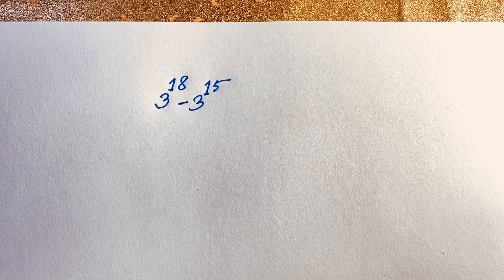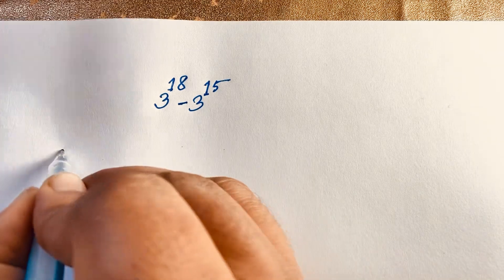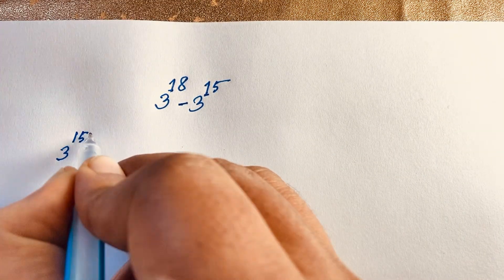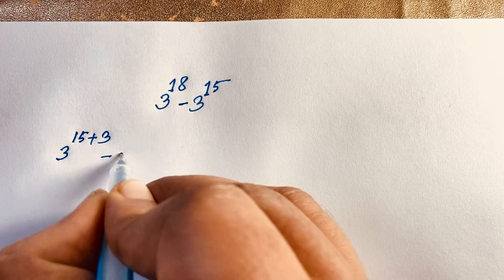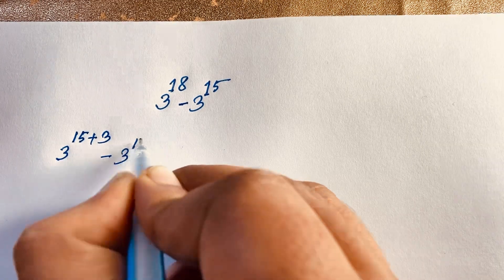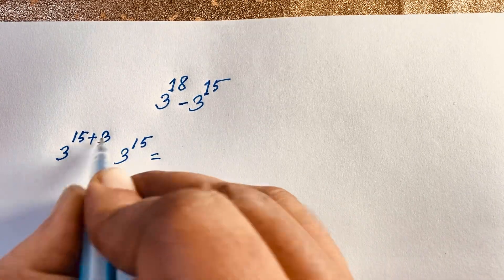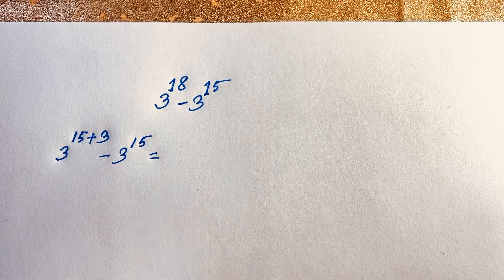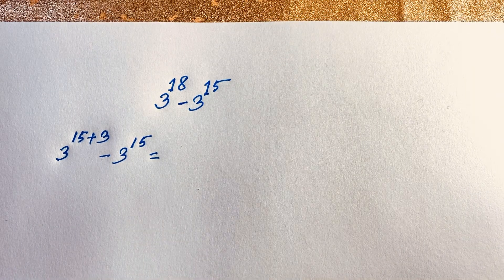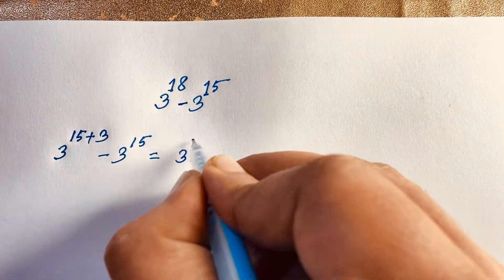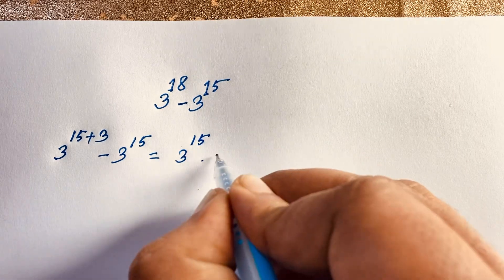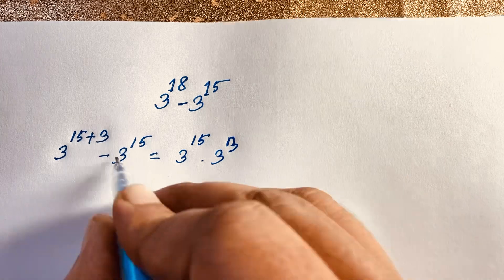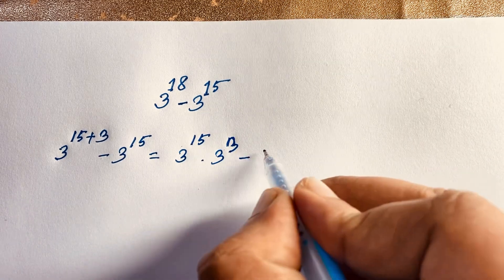First, here is 3 to the power 18. I can rewrite it as 3 to the power 15 plus 3, minus 3 to the power 15. We know that 15 plus 3 equals 18. Then applying the exponential law: a to the power n plus m equals a to the power m times a to the power n.